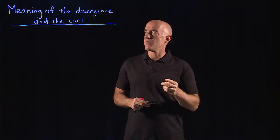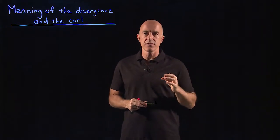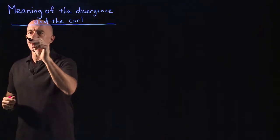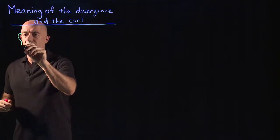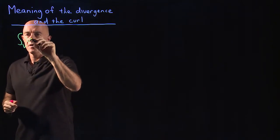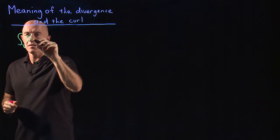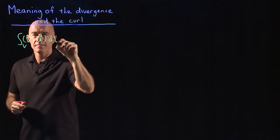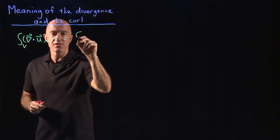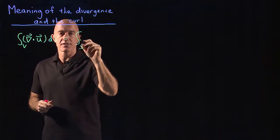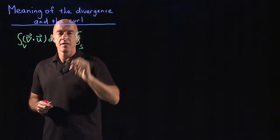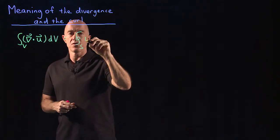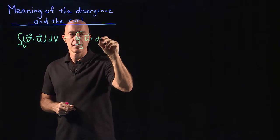So let's start with the meaning of the divergence. We start with the divergence theorem. The divergence theorem says that the integral over a volume of del·u dV is equal to the integral over the surface that bounds the volume of u·dS.